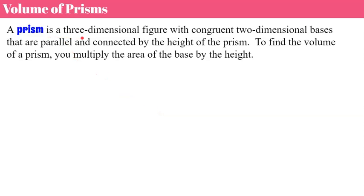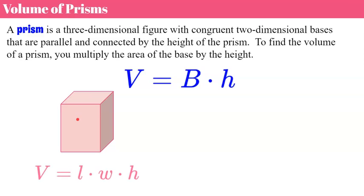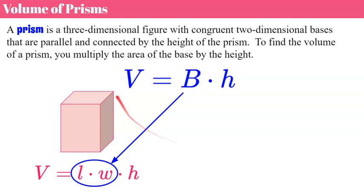Now let's talk about the volume of a prism. A prism is a three-dimensional figure with congruent two-dimensional bases that are parallel and connected by the height of the prism. To find the volume of a prism, you multiply the area of the base by its height. So the formula is: volume equals area of the base times the height. This uppercase B is not to be confused with the lowercase b. For a rectangular prism, because the parallel bases are rectangles, volume equals length times width times height, because length times width is the area of the base.